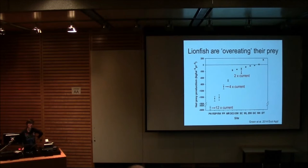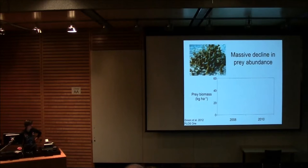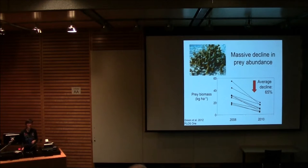Now, this is obviously modeled. If this is true, then we should see obvious declines in prey abundance. And indeed, that's what we see. So we did the same surveys at the same sites in 2008 and 2010, and this is what happened. So on average, just over those two years, there was a 65% decline in prey biomass.